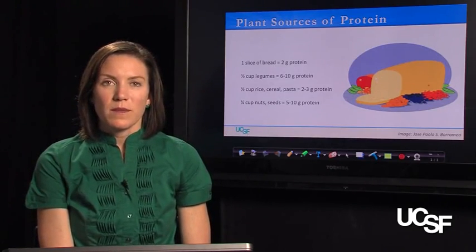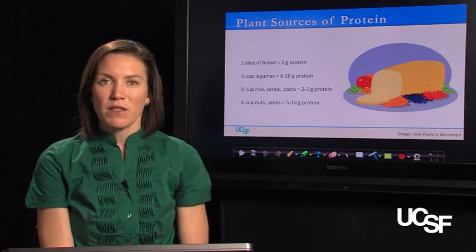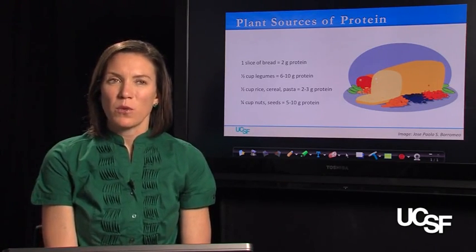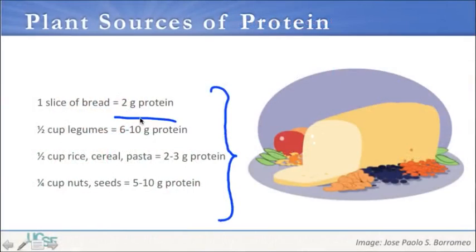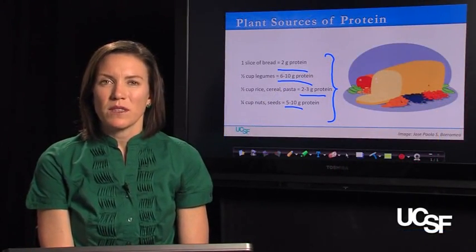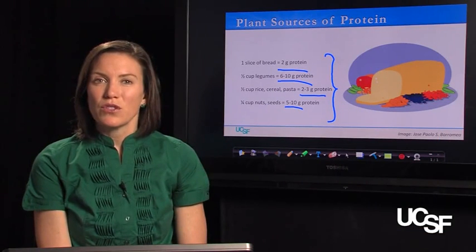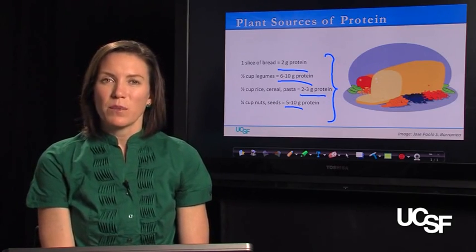Plants also give you protein, though serving sizes of plants give you fewer grams per serving. One slice of bread gives you 2 grams of protein. A half cup of beans gives you 6 to 10 grams. A half cup of rice, cereal, or pasta gives 2 to 3 grams, and a quarter cup of nuts or seeds is 5 to 10 grams. The reality is that most people in the developed world eat too much protein, and we don't need as many animal foods as previously thought.